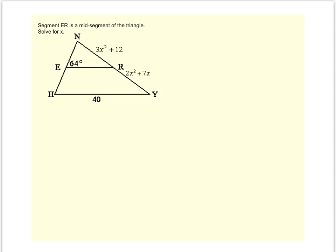One thing it means is that point E is the midpoint of segment NH, and so that means these segments are congruent. And likewise, point R is the midpoint of NY. So these lengths are congruent as well. A couple other things.